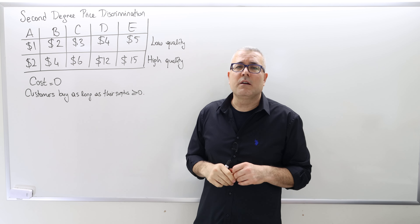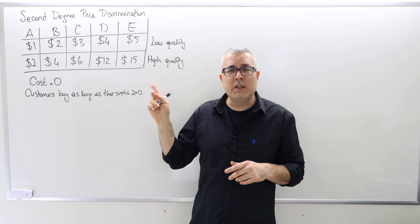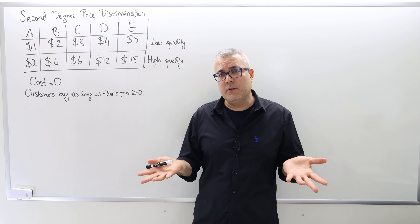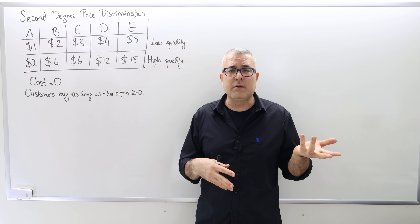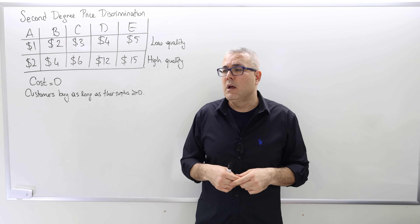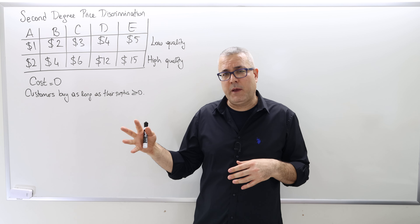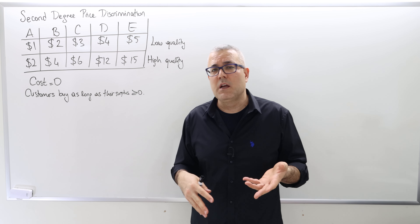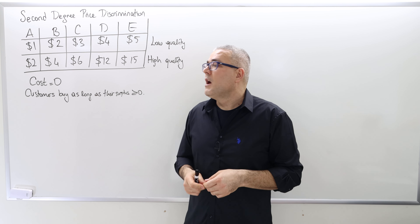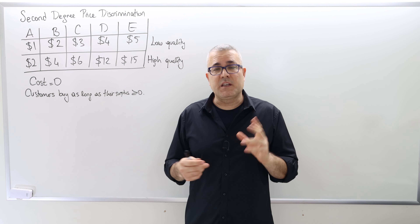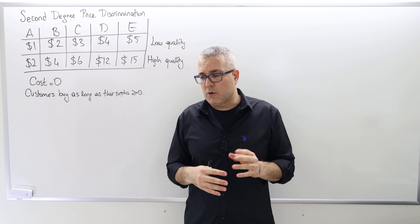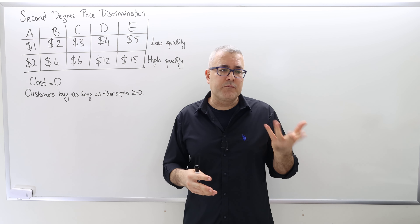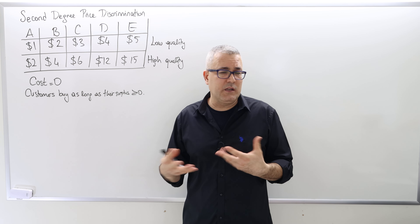I call the customers A, B, C, D, E. Each customer's willingness to pay is known by the monopolist, but the monopolist cannot distinguish the customers. It's like someone is willing to pay $5 and someone is willing to pay $2, but who those people are, I don't know. What the monopolist knows is that some customers are more eager to pay higher prices for higher quality of goods.